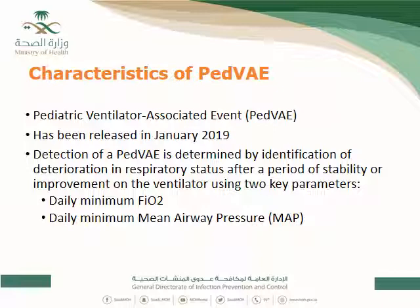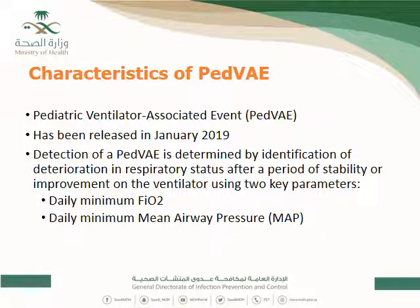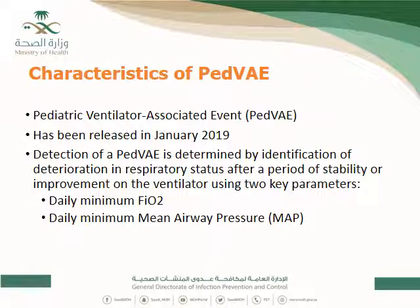Detection of a Pediatric VAE is determined by identification of worsening or deterioration in respiratory status after a period of stability or improvement, similar to the regular VAE. However, the parameters used to determine the respiratory status are daily minimum FiO2 and daily minimum mean airway pressure, or MAP.